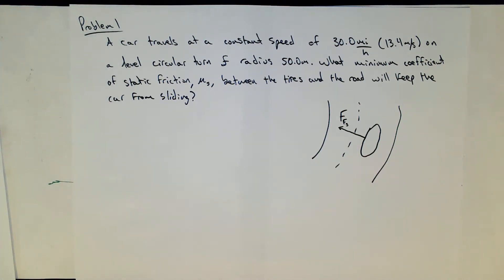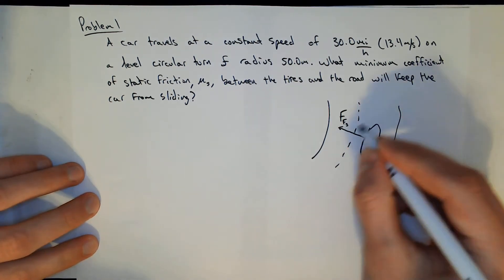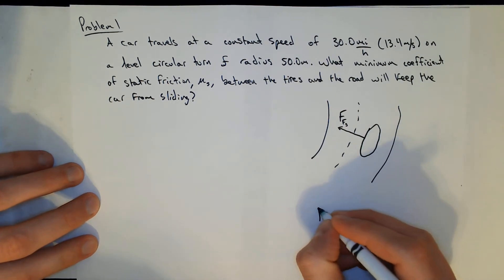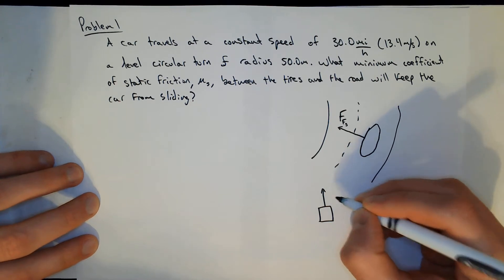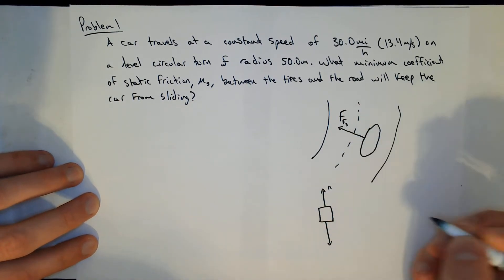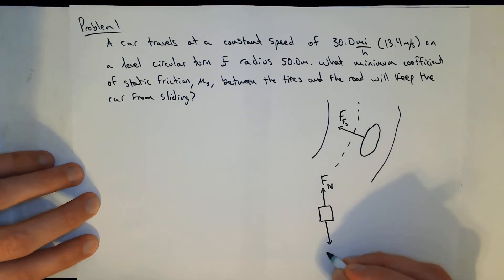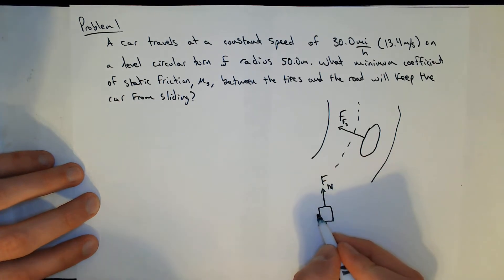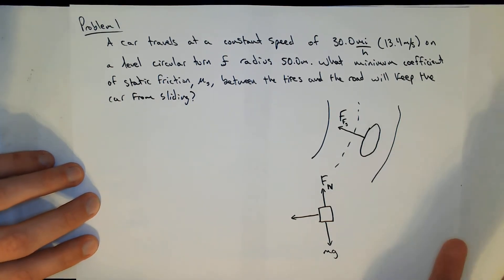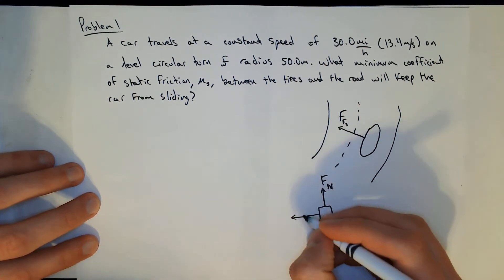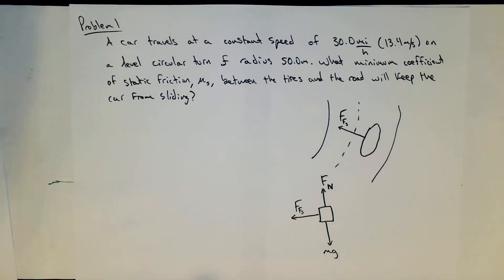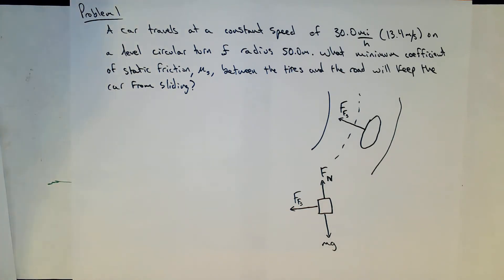Step one is to draw a free body diagram. With friction involved, we need the normal force as well. Drawing the car from the side, we have the normal force F_n pointing up, gravitational force mg pointing down, and the friction force pointing to the left — in the negative direction, consistent with centripetal convention. These three forces are everything acting on this object.